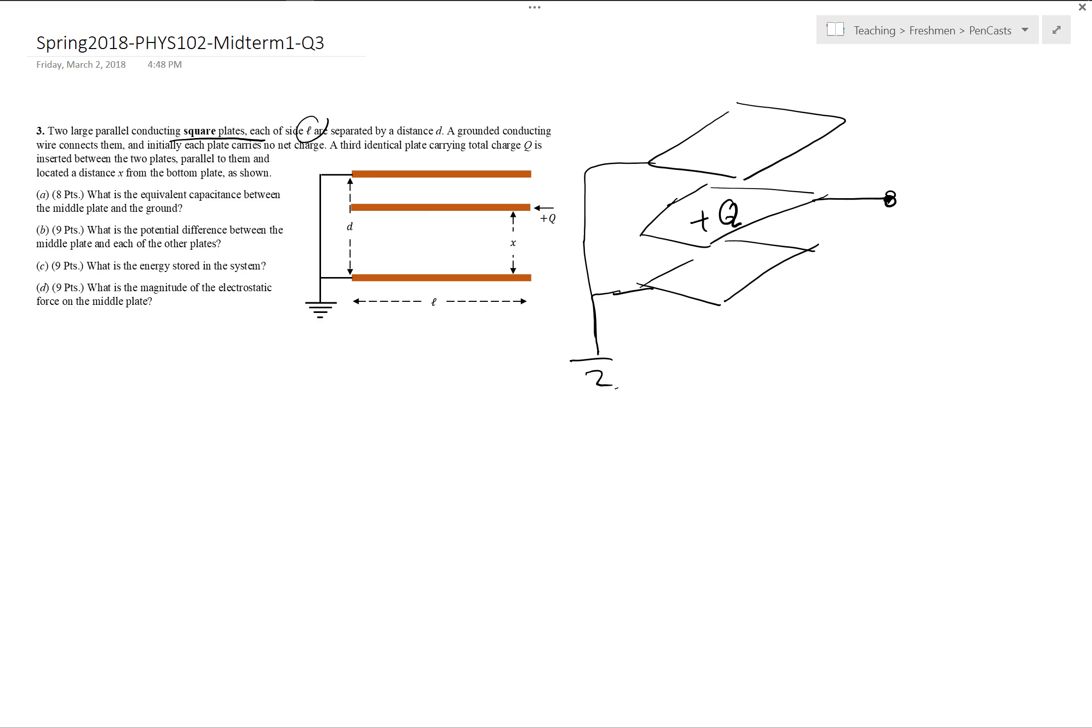So when I put charge Q onto this plate there must be some charges attracted to upper and lower plates, which means this is actually a system of two capacitors, right? The upper capacitor and the lower capacitor. So what's the equivalent circuit? This point is A and this point is ground. The equivalent circuit is the following: I have A and I have two capacitors which are in parallel.